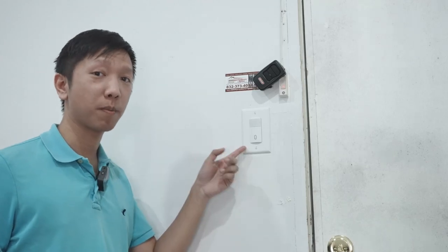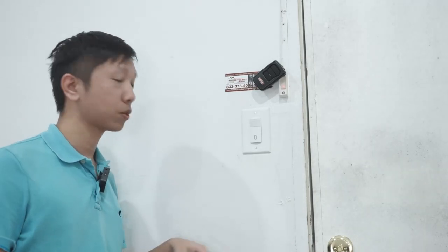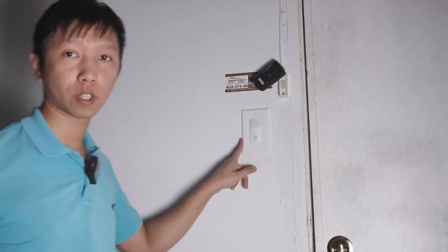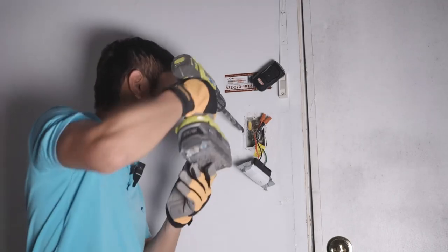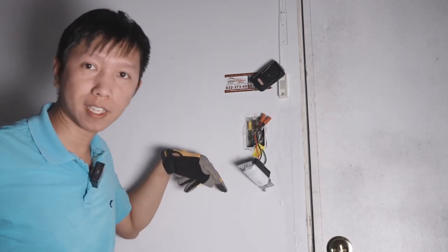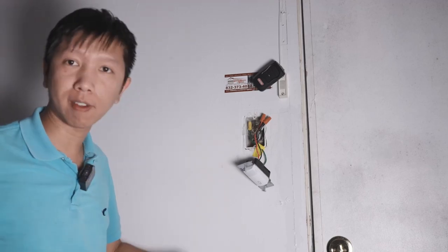The next step we have to do is remove the switch, and before we do that we want to switch off the fuse that leads to this room. Now the light is off, we can remove the switch. Now I'm going to drill a hole right inside of this electrical box so I can have access to run the cable to the opening down here.